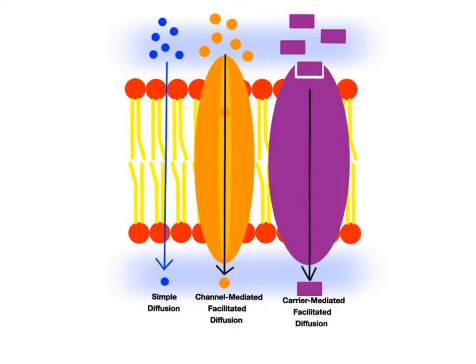These are the three main types of passive transport processes in cells: simple diffusion, channel-mediated facilitated diffusion, and carrier-mediated facilitated diffusion.